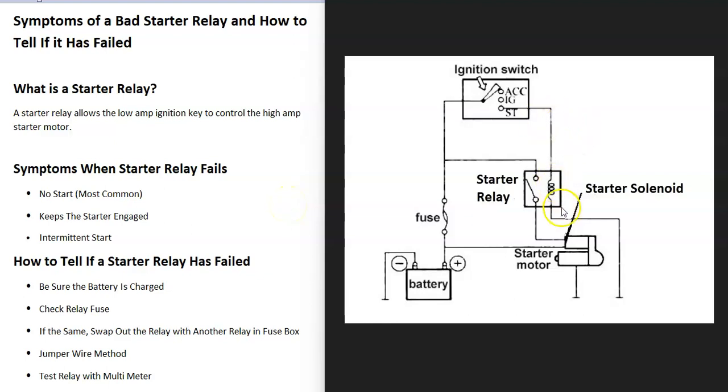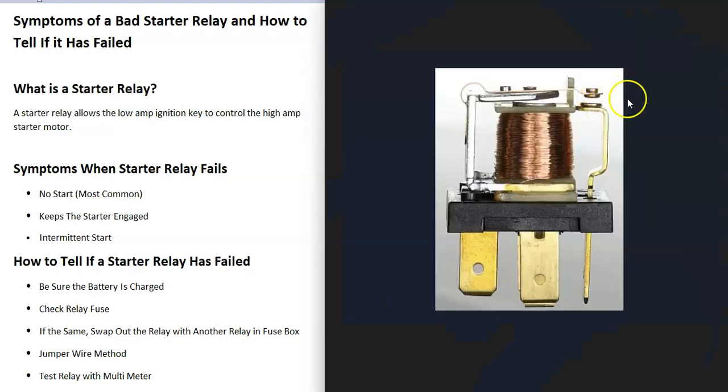When you put the key to the start position, it energizes a coil that pulls down on a little lever and closes the switch to the starter, which allows power to go to the starter solenoid. This is normally open, but when you apply power to two pins, it closes this gap and allows power to come through and go to the starter.